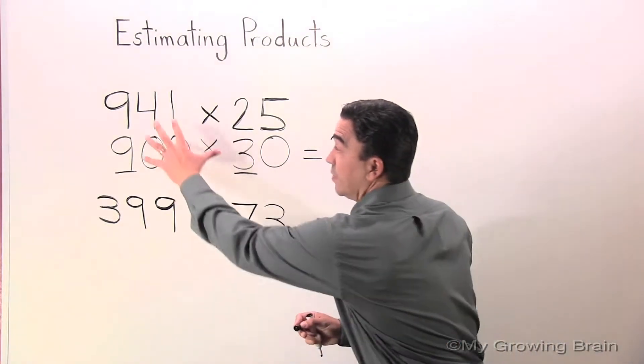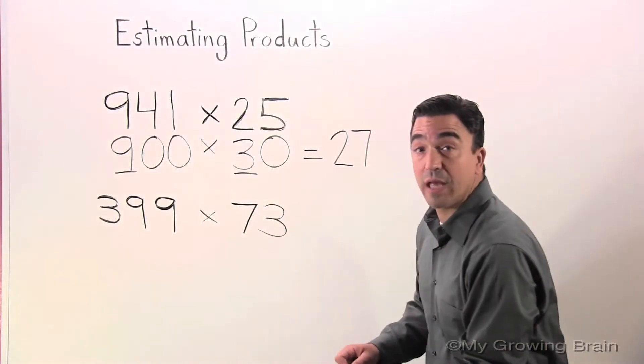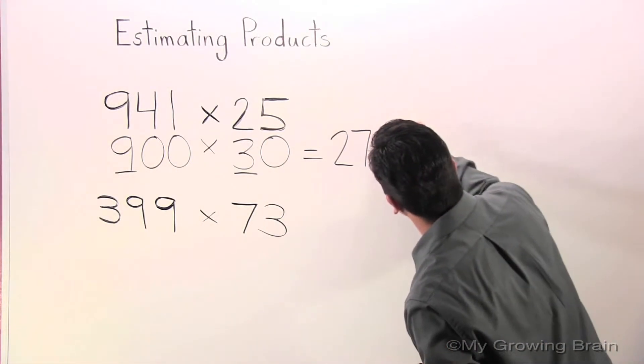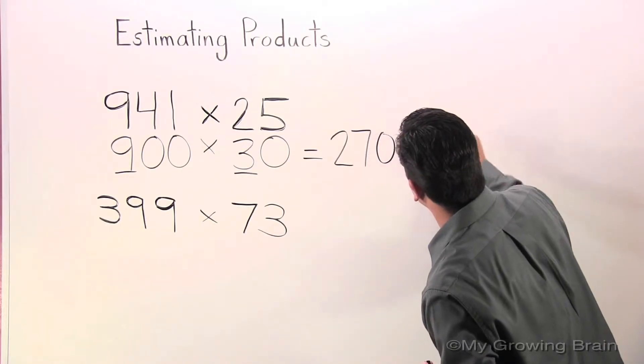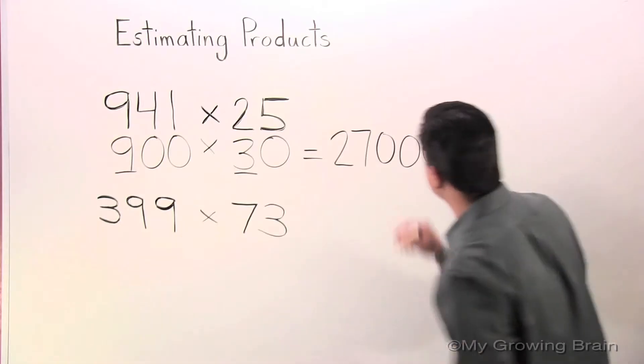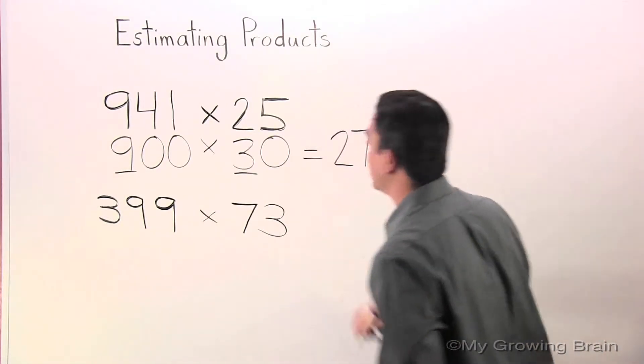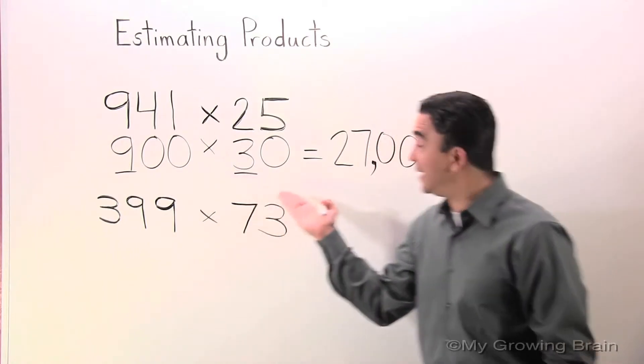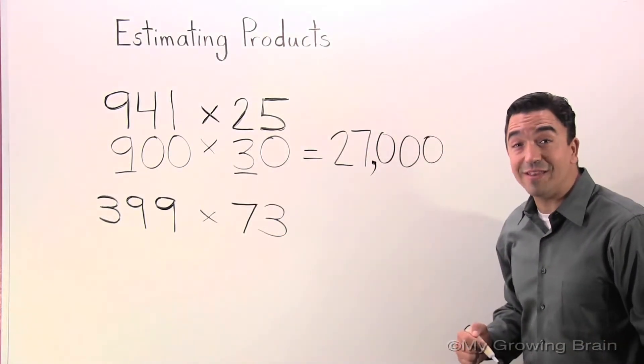9 x 3 is 27. Now, I'm going to take my three zeros and I'm going to put them right over here. Don't forget the comma. 900 x 30 equals 27,000.